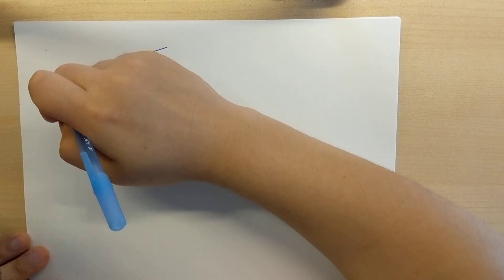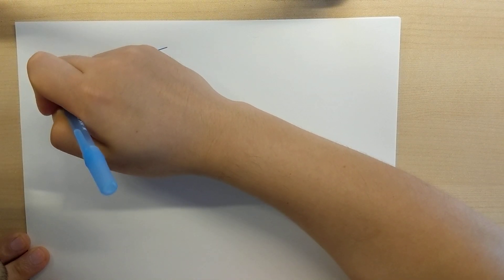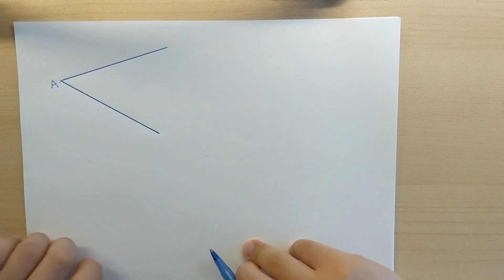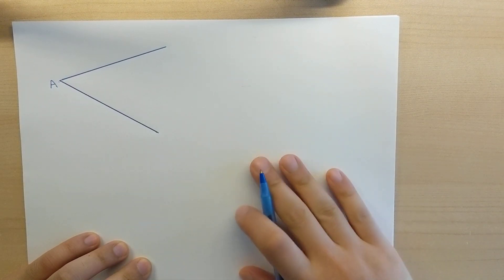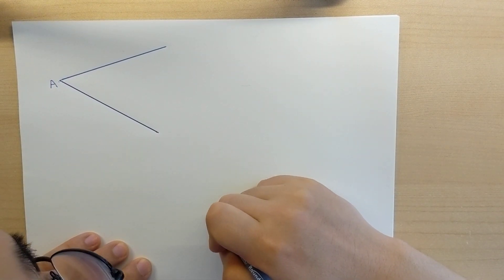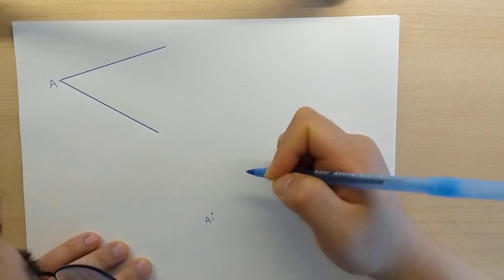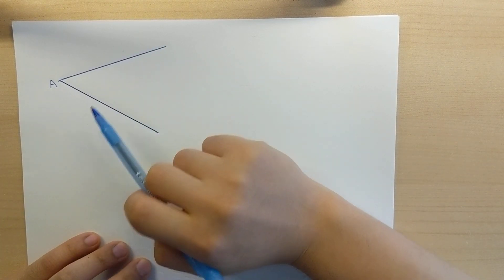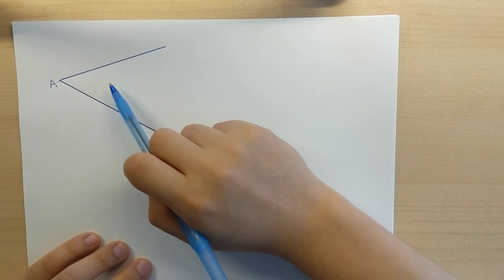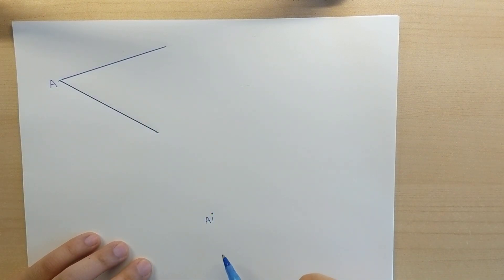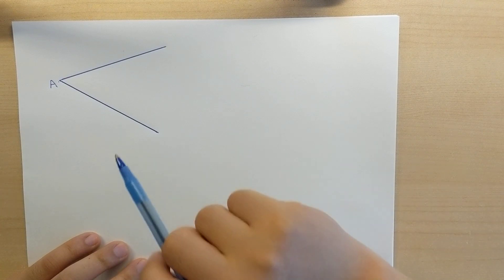And I'm going to call this point, this vertex here, I want to call that A. And I'm going to place this point somewhere else on the paper, I'm going to call that point there A prime. So what I'm going to attempt to do is I'm going to copy this angle and then place that angle opening on A prime.